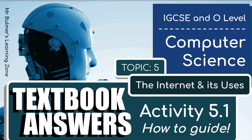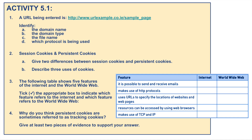Hello and welcome back to the first video for topic 5, The Internet and its Uses, where we're going to look at the activities in the textbook and try to answer them. The first part will cover URLs — Uniform Resource Locators — then cookies, then the differences between the World Wide Web and the Internet, and then back to cookies.